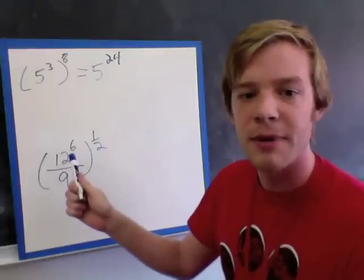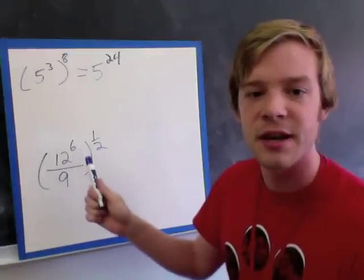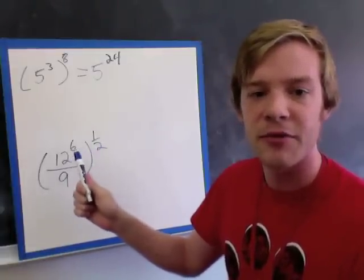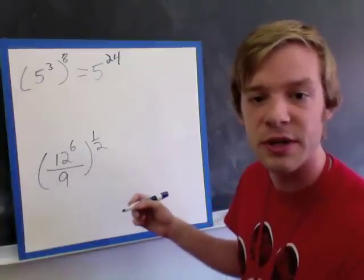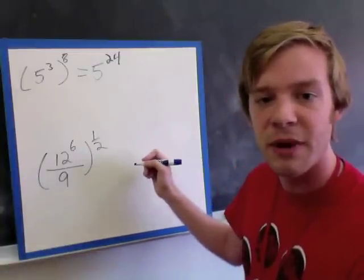So when I bring my power of 1 half inside, I need to multiply it by the power that I have here. So I've got a power of 6 times by 1 half, 6 times by 1 half is 3, so I'm going to have 12 to the power of 3.